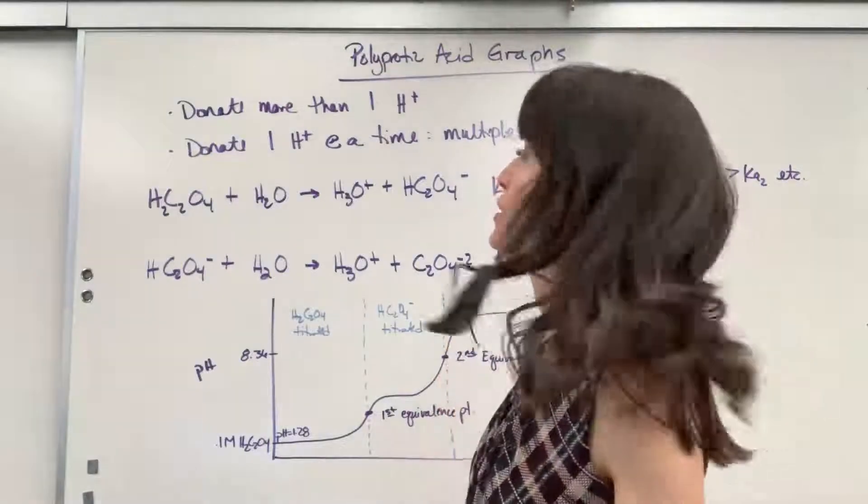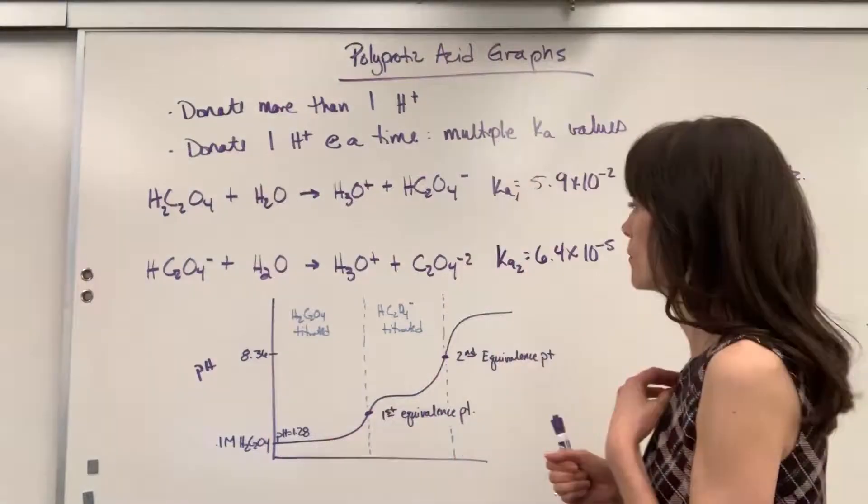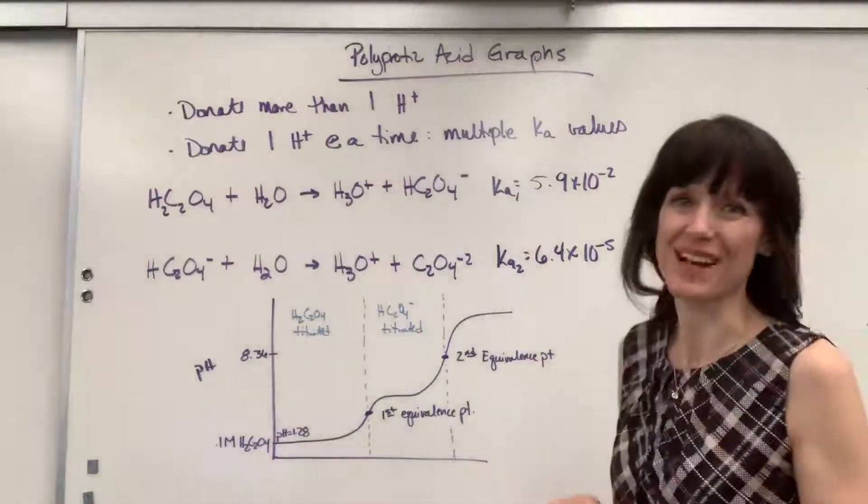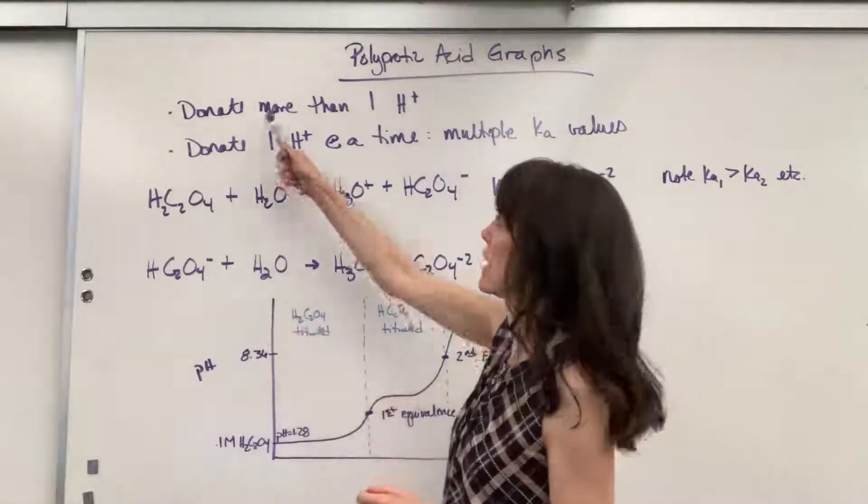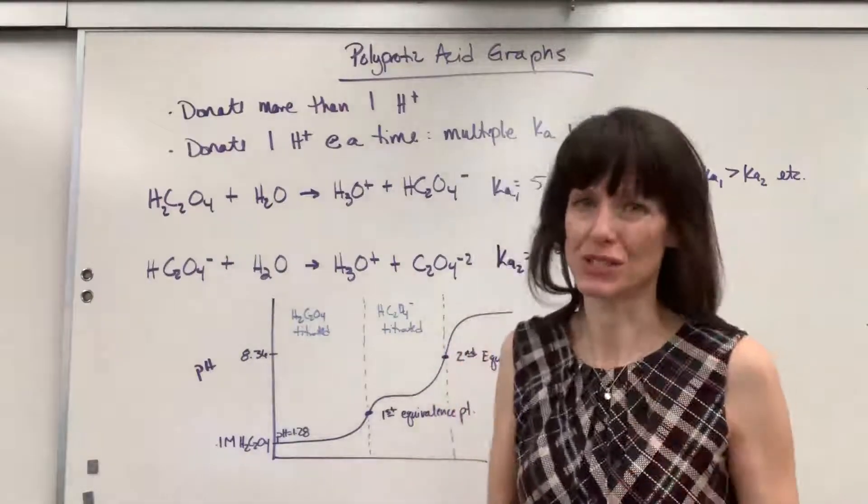Hi, I'd like to show you how to interpret and draw polyprotic acid graphs. So just a little reminder, a polyprotic acid is going to be an acid that has more than one hydrogen to donate.